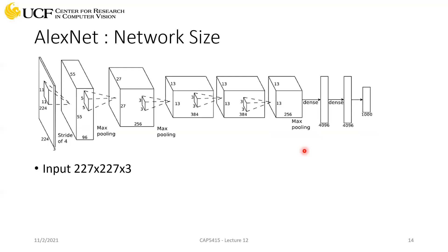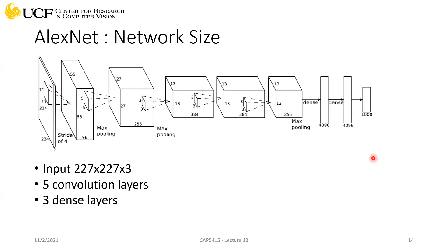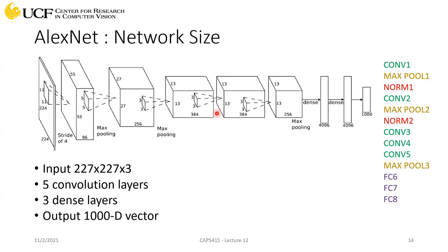Let's briefly go over AlexNet, which we discussed earlier. This architecture was used for classification — given an input image, predict which object category is present. It was one of the first deep architectures used successfully on large-scale datasets, classifying a thousand different classes and making a thousand predictions. Compare this with SVM, where you'd need to train that many separate classifiers — one per category. With this network, you just have one network for all classes.